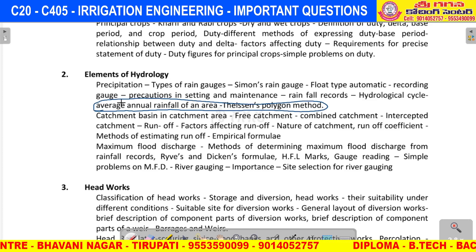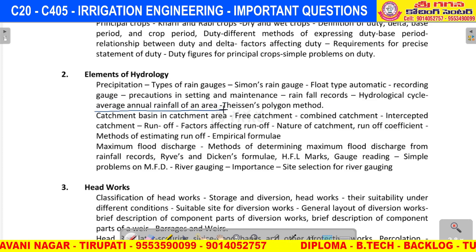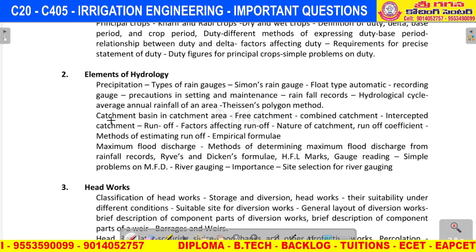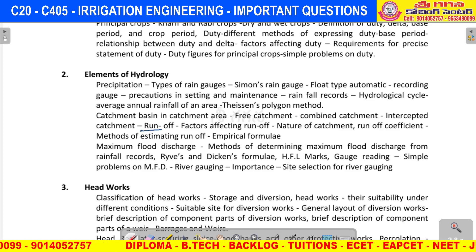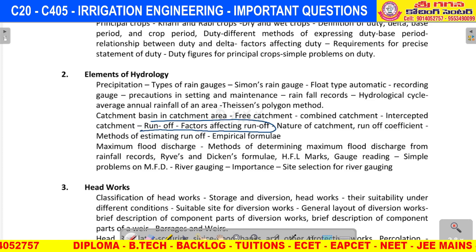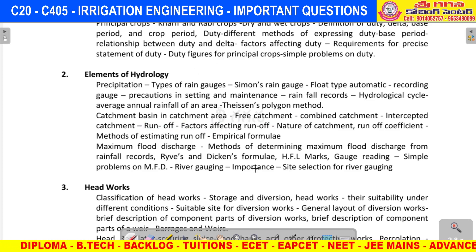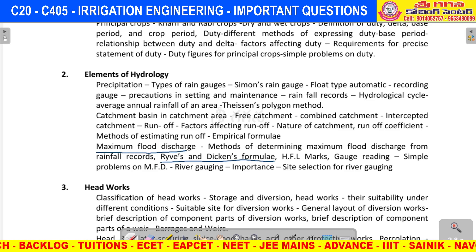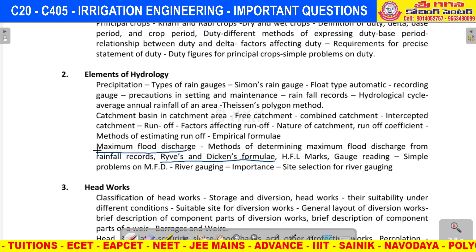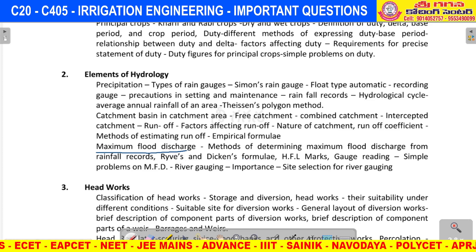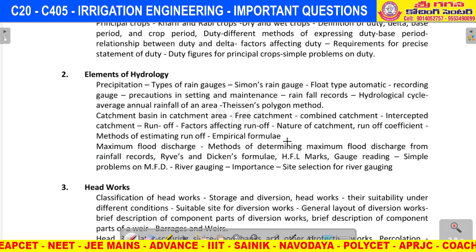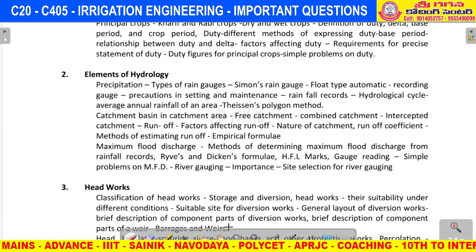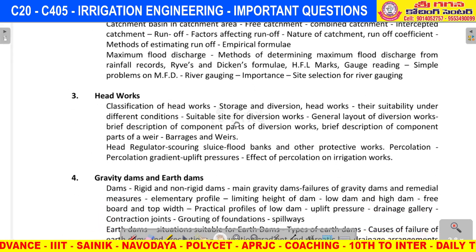Problem: calculate average annual rainfall using the Thiessen polygon method. Next, runoff — very important. Factors affecting runoff — important. Calculation of maximum flood discharge using Ryve's and Dicken's formula. Last and final: site selection for river gauging. That completes unit 2 topics — 17 marks.